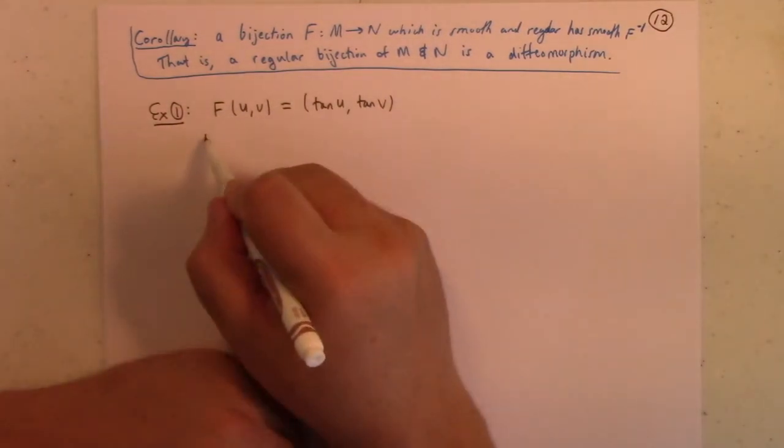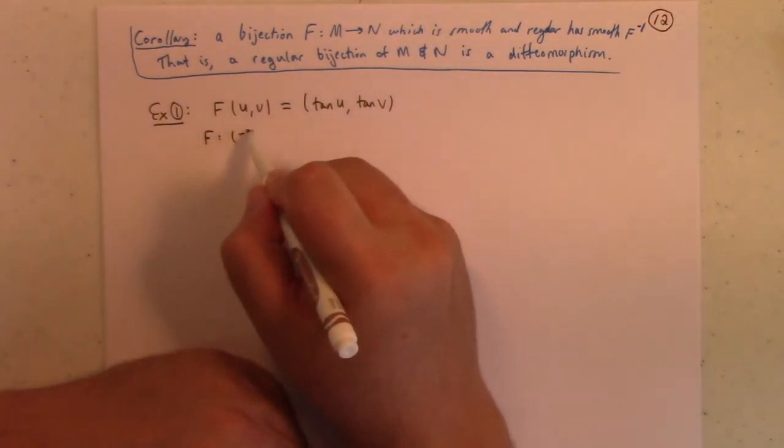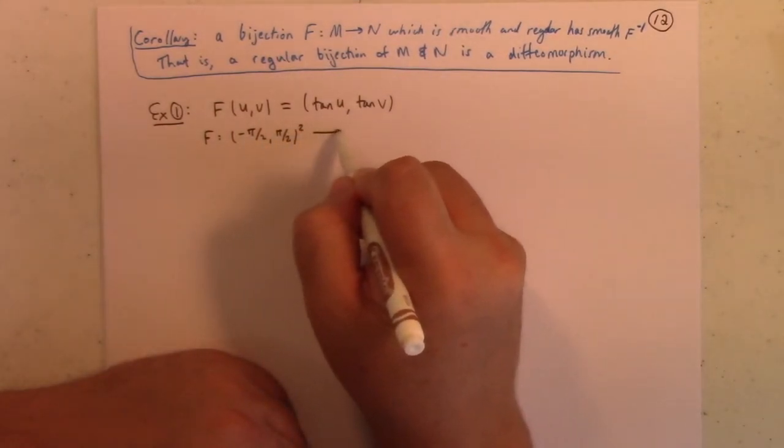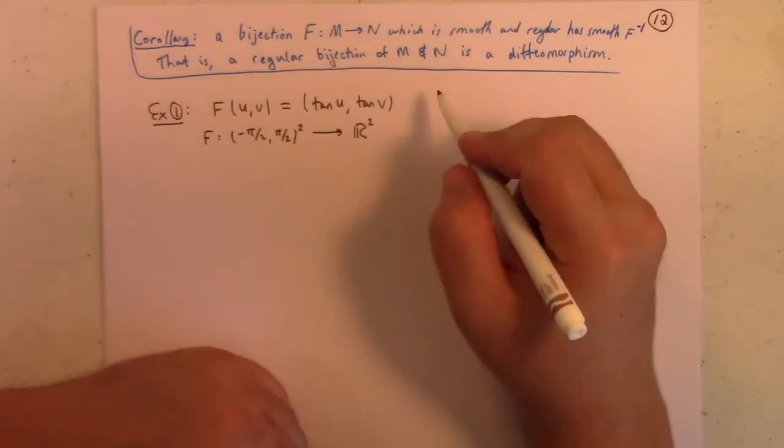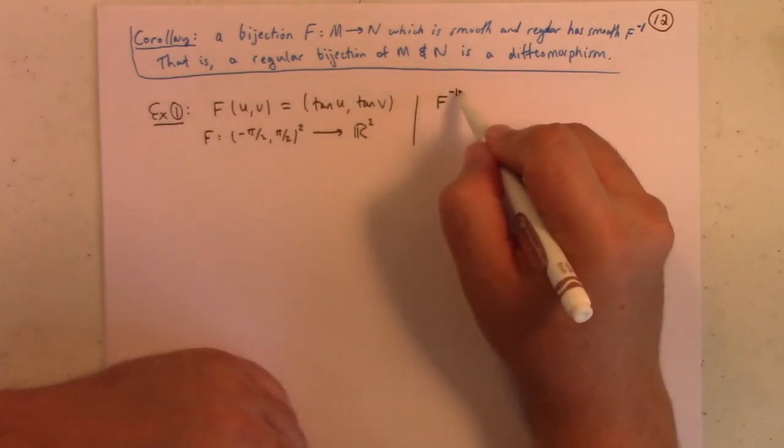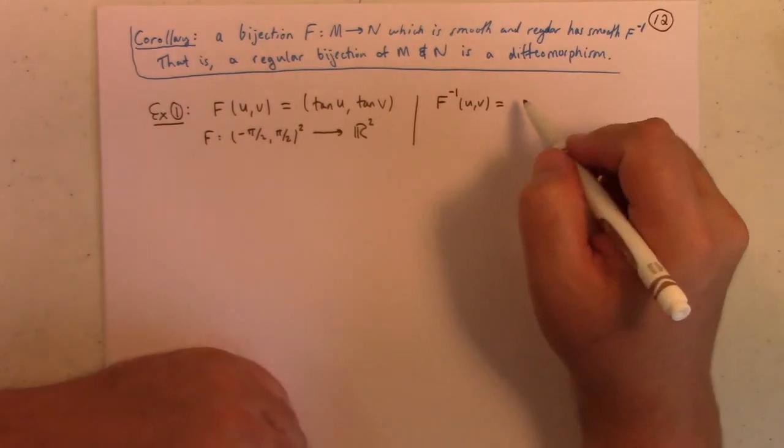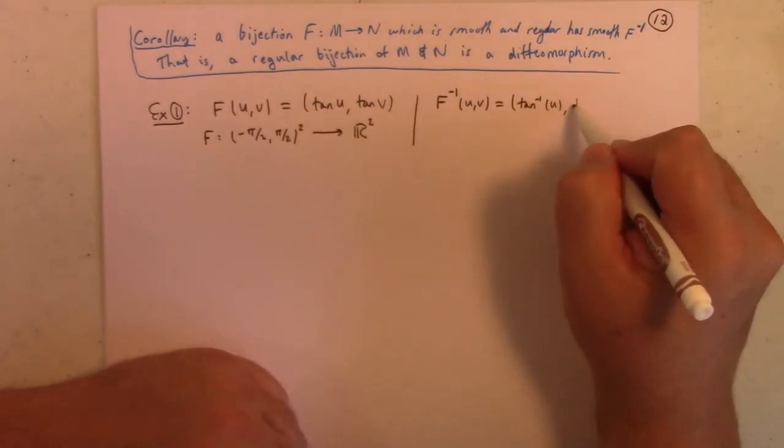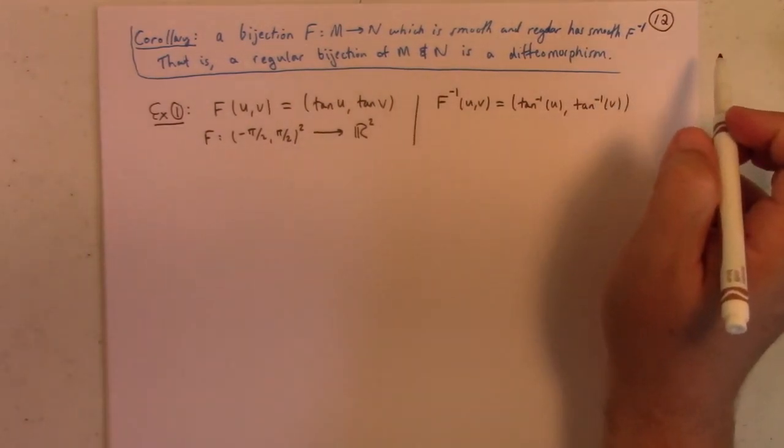So, f of (u,v) is (tan u, tan v). So, this is, f is a mapping from the open interval minus pi over 2 to pi over 2 across itself to the plane. Right. Okay, the inverse map is given by the standard inverse tangent. So, it's easy enough to see that those are inverses.